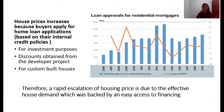House prices increase because buyers not only purchase houses for shelter purposes, but also for investment purposes, discounts from developer projects, and custom-built houses. Since the mortgage repayment is lower and the home loan term is much longer, this has enabled people to buy houses priced beyond what they could afford, prompting developers to build more houses at elevated prices. Therefore, a rapid escalation of housing prices is due to effective housing demand backed by easy access to financing.